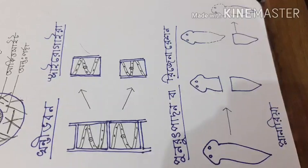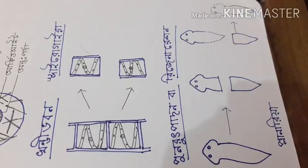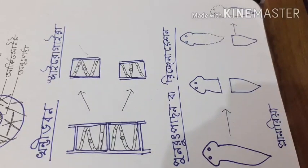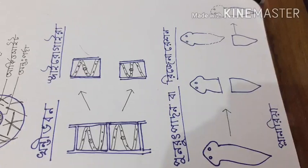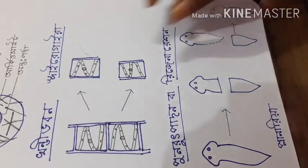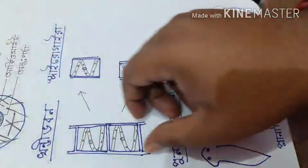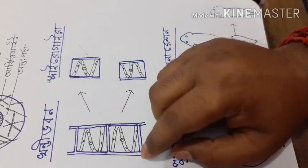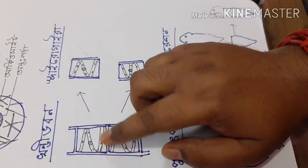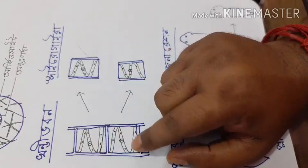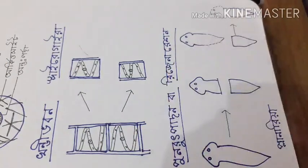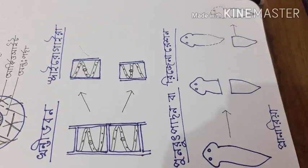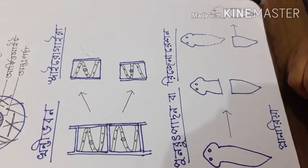So first we will be able to understand the next root part. The root part is a root part, and all the root part is a root part, so that the root part is very large.